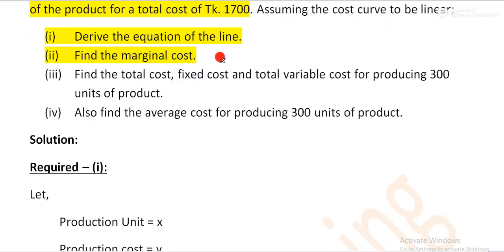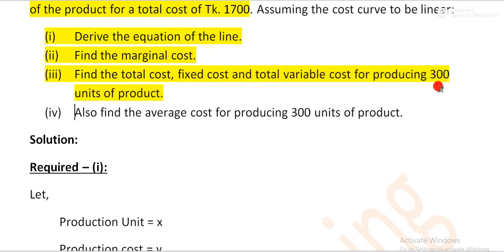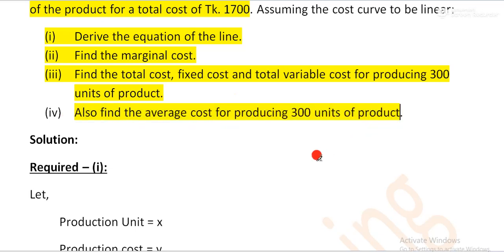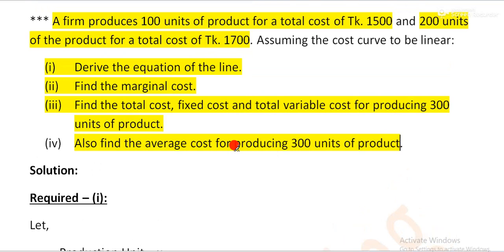Marginal cost — we need to find the total cost, fixed cost, and total variable cost for 300 units of product. The third requirement is also to find the total cost for 300 units of product.